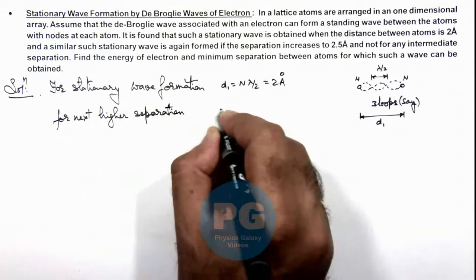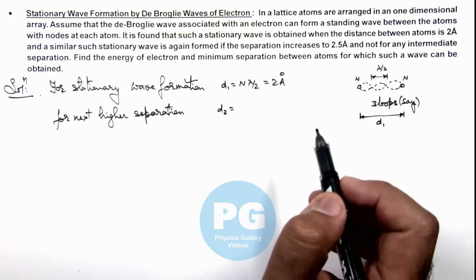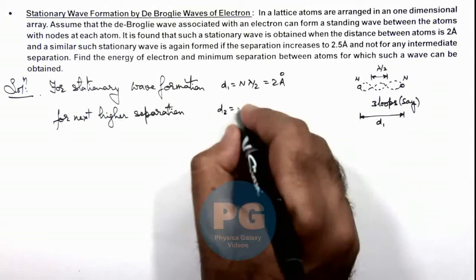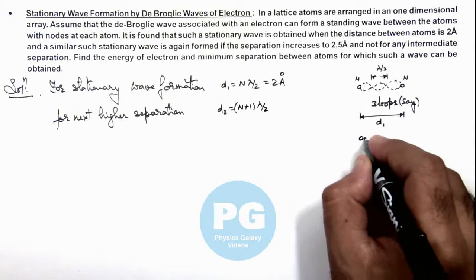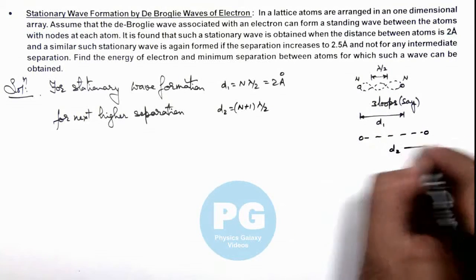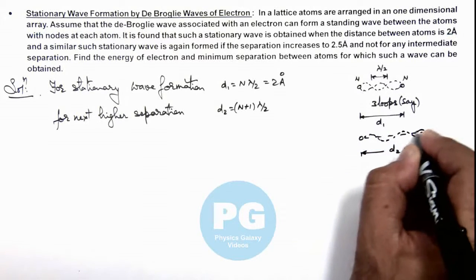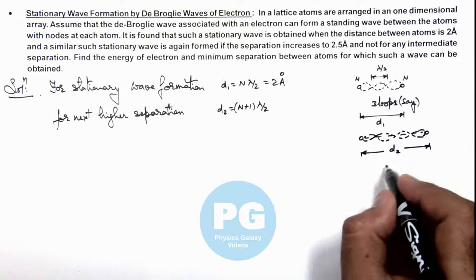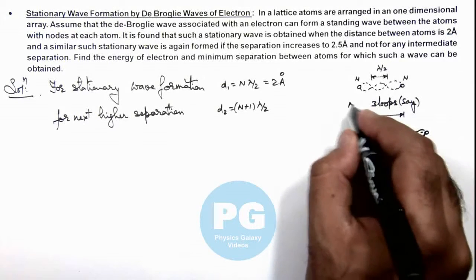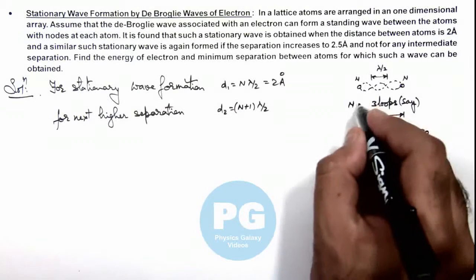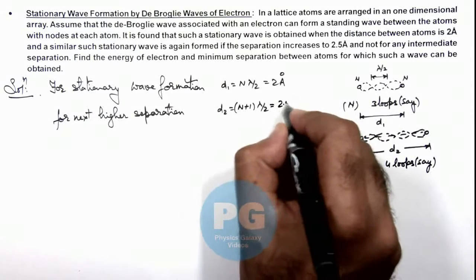For the next higher separation, say if it is d₂, then as electron energy is constant, its de Broglie wavelength is constant. So for the next higher separation, it must become (n+1)λ/2, as one loop will increase. One site is here and the other site is at a distance d₂, such that instead of 3, 4 loops are being formed. I am just taking an example as 3 or 4, and here the value of the next higher separation is 2.5 angstrom.